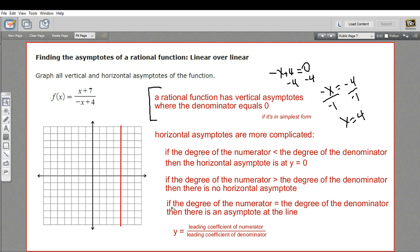So that situation is down here. It says if the degree of the numerator equals the degree of the denominator, there is an asymptote at this line. y equals the coefficient of the leading term of the numerator over the coefficient of the leading term of the denominator.